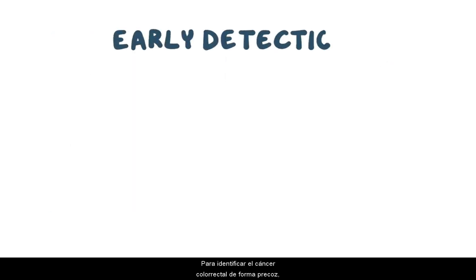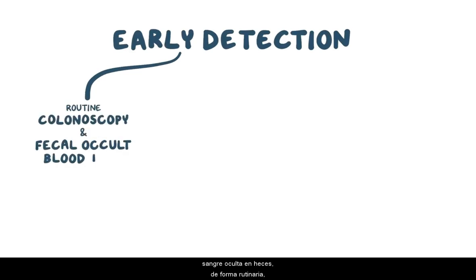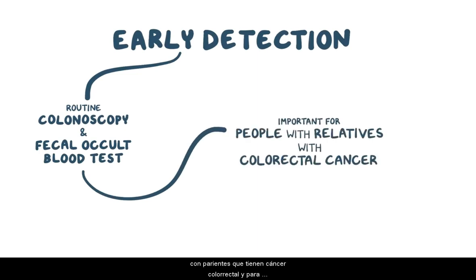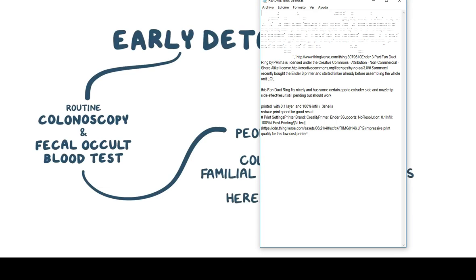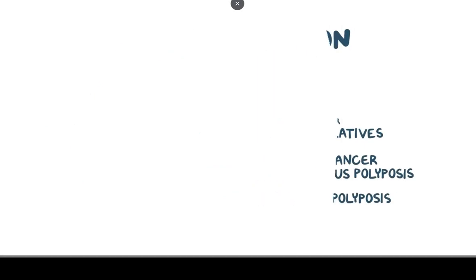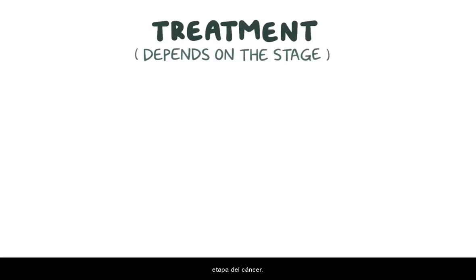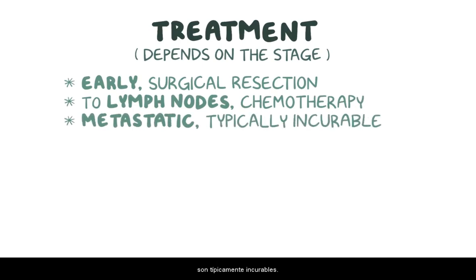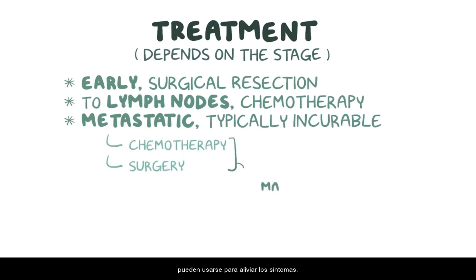To identify colorectal cancer early, routine colonoscopy and fecal occult blood tests can be done to look for neoplastic polyps or early carcinomas so that they can be removed at an early stage. This is particularly important for individuals with relatives that have colorectal cancer, and for those with disorders like familial adenomatous polyposis and hereditary nonpolyposis colorectal cancer. Treatment depends on the stage: early cancers confined to the wall of the colon are often surgically resected, those that have spread to nearby lymph nodes are treated with chemotherapy, and metastatic cancers are typically incurable, though chemotherapy or surgery can be used to ease symptoms.